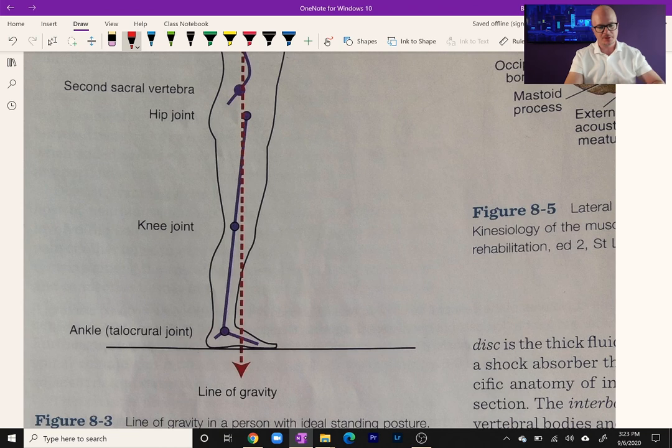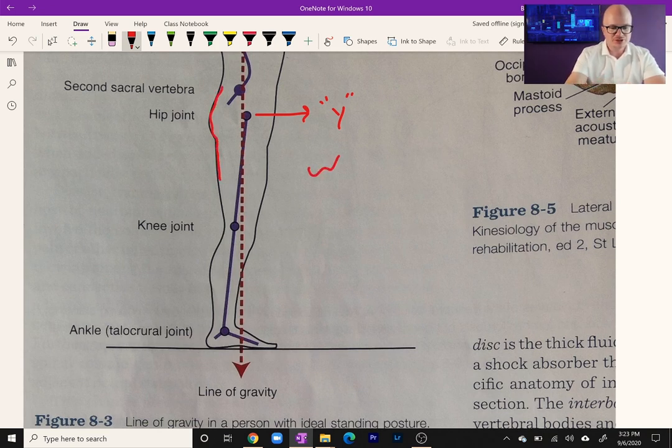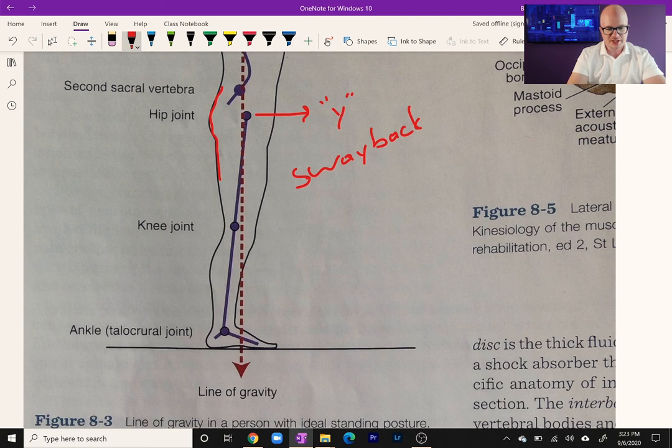Looking here at the hip, the plumb line falls slightly posterior to the hip. This is going to want to fall this way, which is why we have that Y ligament, the iliofemoral ligament. If we have weak glutes, you're going to lean back and you'll be on that Y ligament. If your glutes are weak, then you lean back on the Y ligament, and with sway back posture the plumb line moves posterior, so your hip is going to be more into extension, the whole pelvis shifting forward.